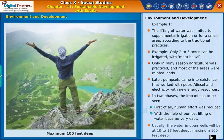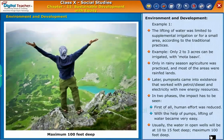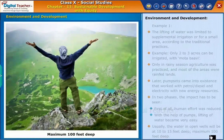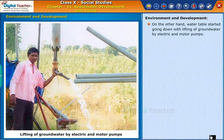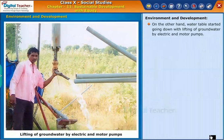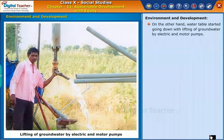Usually the water in open wells is at 10 to 15 feet deep, maximum 100 feet deep. On the other hand, water tables started going down with the lifting of groundwater by electric and motor pumps.